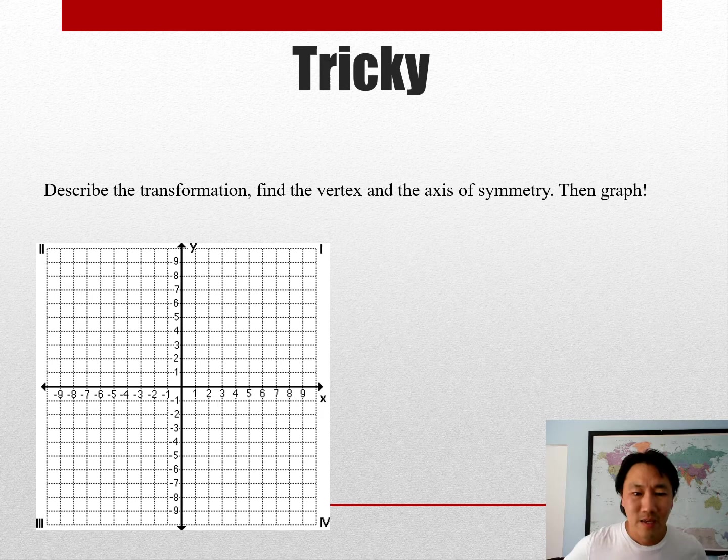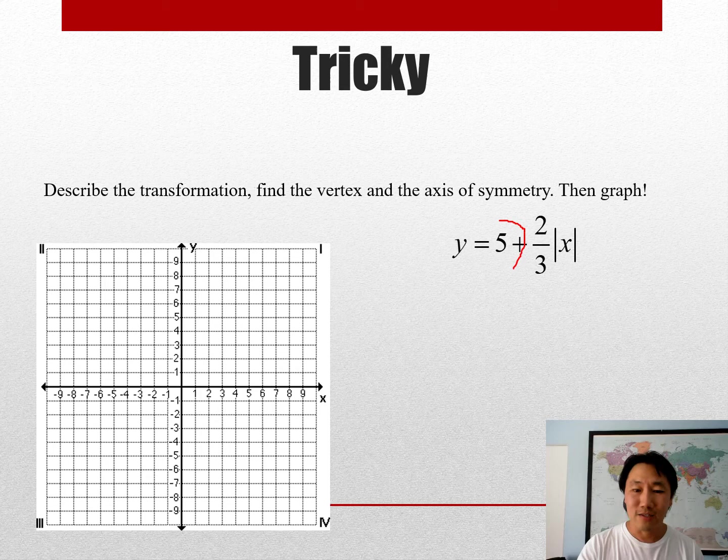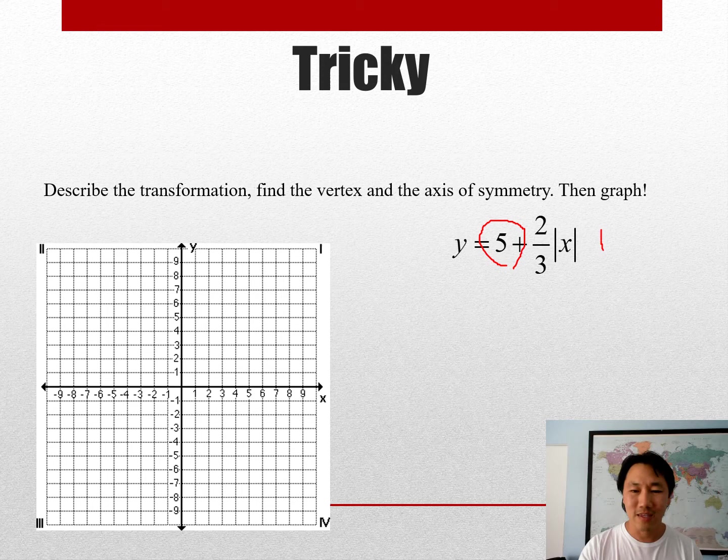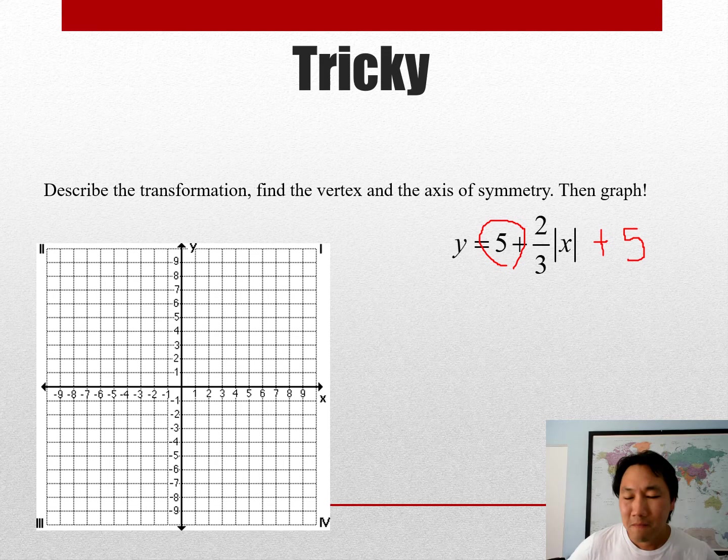Let's do one that says tricky. I mean it's not too tricky. It's basically the same thing. The only thing different is this plus five, which is tricky only because in the general equation the plus five was at the end. So now I'm putting it in the front, which sometimes tricks people, and that's why I put it in the tricky section.